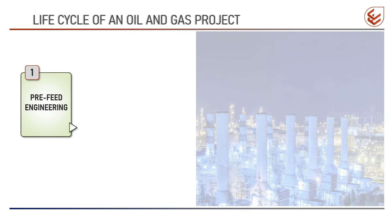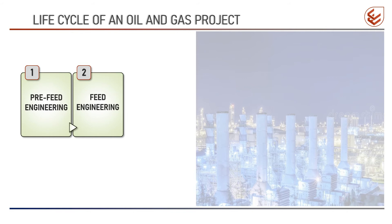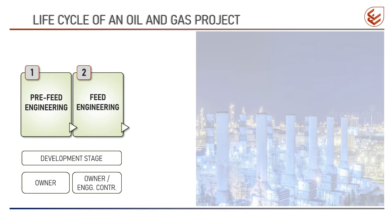The first phase is pre-FEED engineering, also called conceptual design, which is done by the owner. In this phase, various studies are done to ensure the project will be legally, technically, and economically feasible. The basic process flow diagrams, process design basis, functional requirements, plant capacities, and final product specifications are prepared and approved by the owner's management. The second phase is FEED engineering, also called basic engineering. For preparation of the FEED package, the owner generally engages an engineering contractor. In this phase, the project scope, design basis, basic engineering documents and drawings, bill of quantities, execution plan, schedule, and cost are prepared and approved by the owner's management through a gate approval. Only after this approval is the project physically executed.